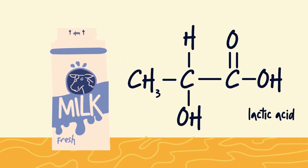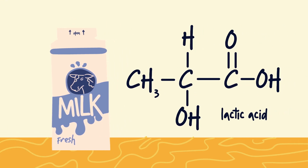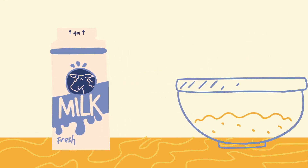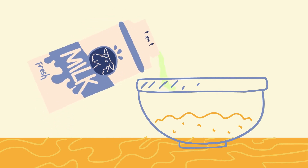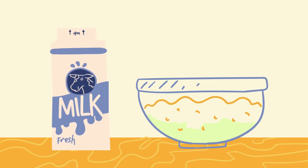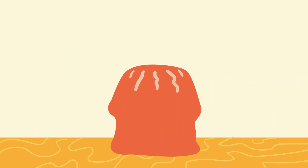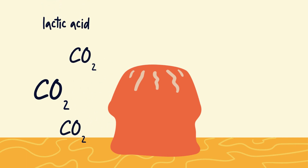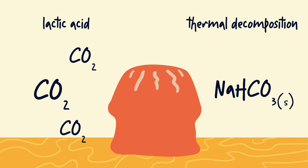When milk turns sour, lactic acid is made. If sour milk is used to make a cake mix, this begins the reaction to generate carbon dioxide before it's even placed in the oven. This can give a lighter baked cake, as more carbon dioxide is made than by just relying on thermal decomposition of sodium hydrogen carbonate, and is also a way of using up sour milk.